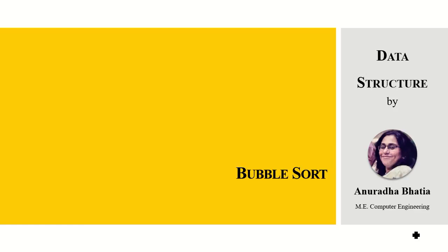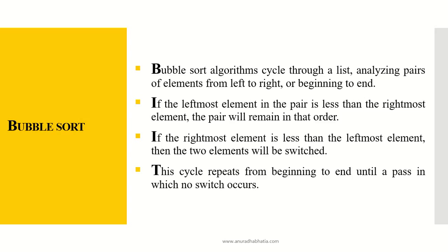Let's study bubble sort, the simplest of the sorting techniques for any data structure implementation. Bubble sort algorithms cycle through a list, analyzing pairs of elements from left to right. If the leftmost element in the pair is less than the rightmost, the pair remains in that order. If the rightmost is less than the leftmost, the two elements will be switched. This applies when sorting from smallest to largest; the condition reverses for largest to smallest. This cycle repeats until a pass in which no switch occurs.